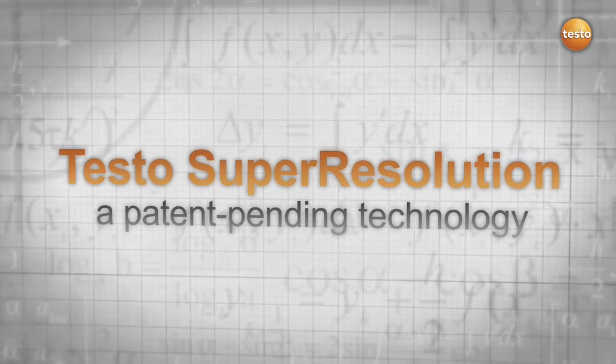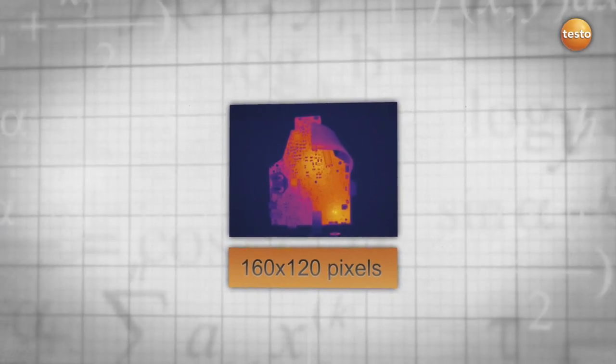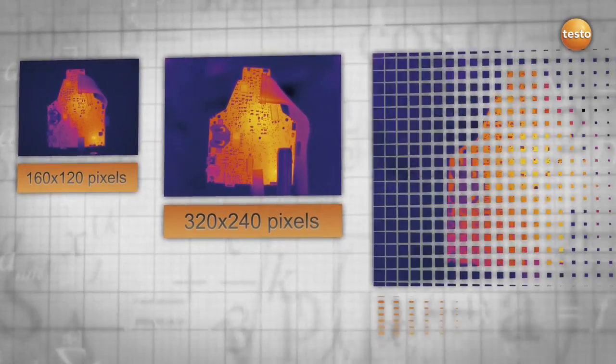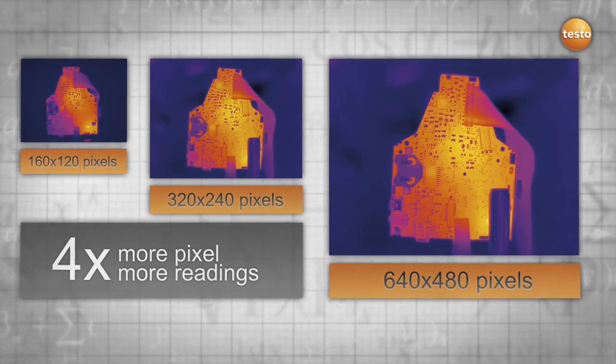The patent pending Testo Super Resolution technology provides you with four times more readings, which results in a much more detailed thermal image. It makes the image quality of your Testo thermal imager a cut above the rest with four times as many pixels and a more detailed picture.